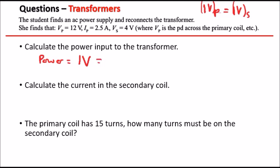So in this case, because we actually have both primary values, we can use the primary for the current and the primary coil for the potential difference. So it will be 2.5 times 12. And that's it guys. Initially, if you put this in the calculator, you should get exactly 30 watts.